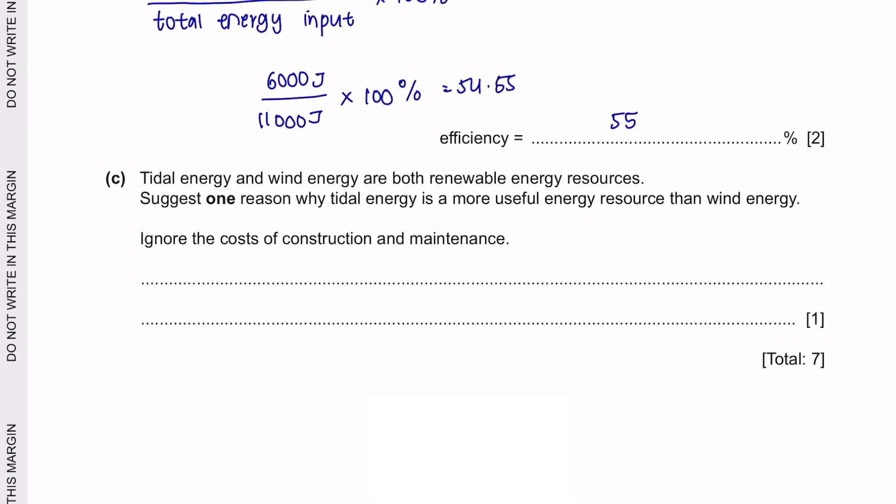Next question C. Tidal energy and wind energy are both renewable energy resources. Suggest one reason why tidal energy is more useful energy compared to wind energy. Ignore the cost of construction and maintenance. Tidal energy is from waves and they are more predictable and reliable compared to wind energy.